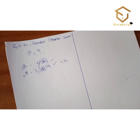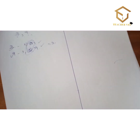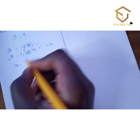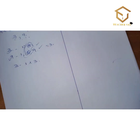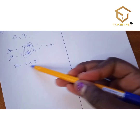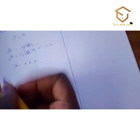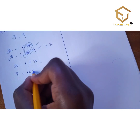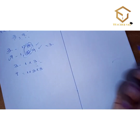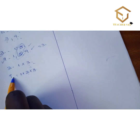The GCD can also be obtained by first expressing each number as a product of its prime factors. For 3: it is 1 × 3. For 9: it is 1 × 3 × 3. When you multiply 1 × 3 × 3 you get 9.